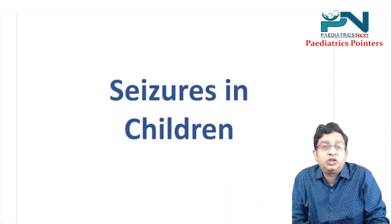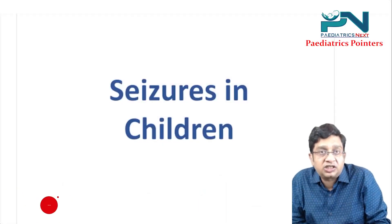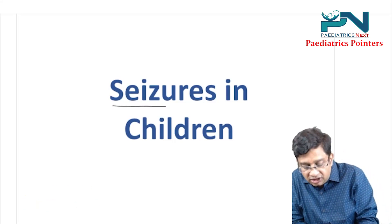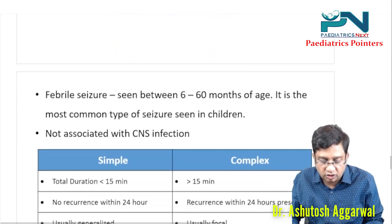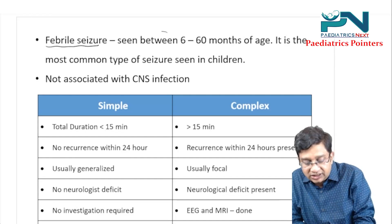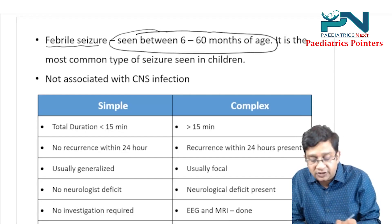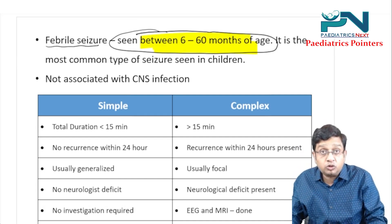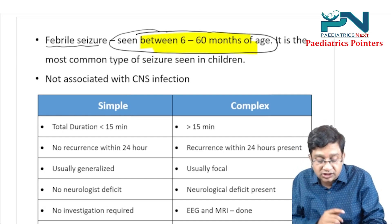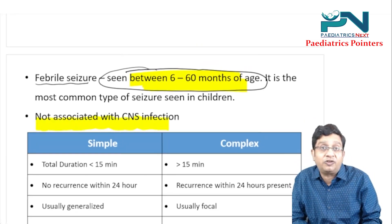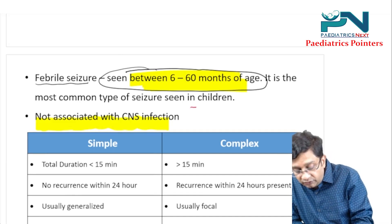Welcome to the Pediatrics Pointer, the pediatrics revision series. Today the topic is CNS seizures in children. Febrile seizures are seen between 6 to 60 months of age — the age group is really important. It is the most common type of seizure seen in children, and more specifically, it is not associated with CNS infection.